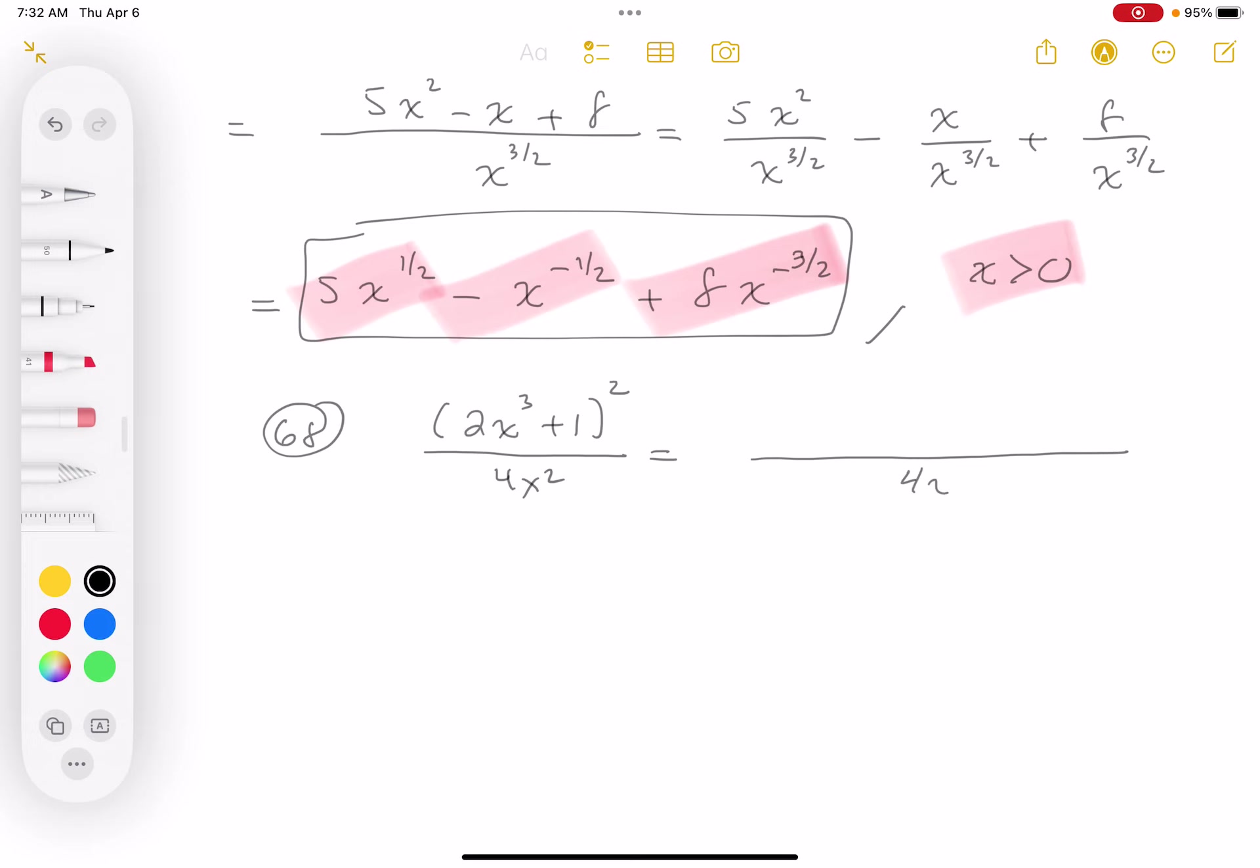I need to expand it, so I need to square the first term, which will be 4x⁶. Then it's going to be 2x³ times 1, which is 2x³, but I need two of those.